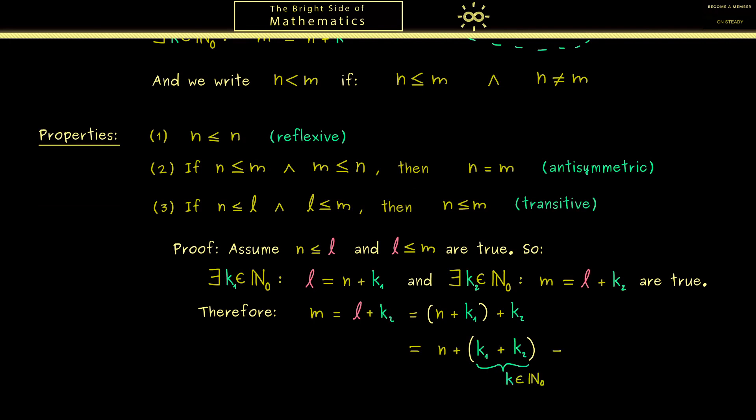We know the addition gives us again a natural number. In other words, we now know there exists a k such that m is equal to n plus k. And by definition this is simply n is less or equal than m. With this you should see we have in fact proven the implication in 3.